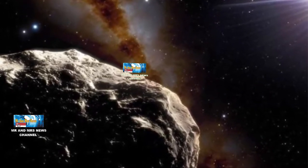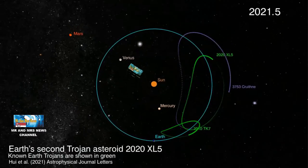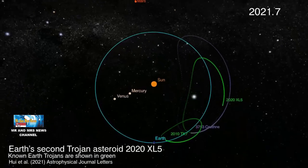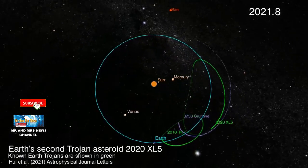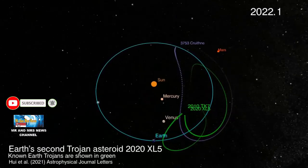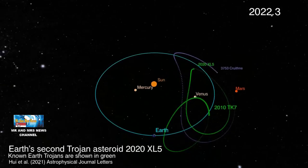Asteroid Trojan merupakan asteroid yang juga dikenal sebagai planet minor yang berbagi jalur orbit dengan planet yang lebih besar lainnya di tata surya. Asteroid-asteroid ini dapat ditemukan di dua wilayah gravitasi stabil yang memimpin dan mengikuti planet tersebut yang dikenal sebagai titik Lagrange.